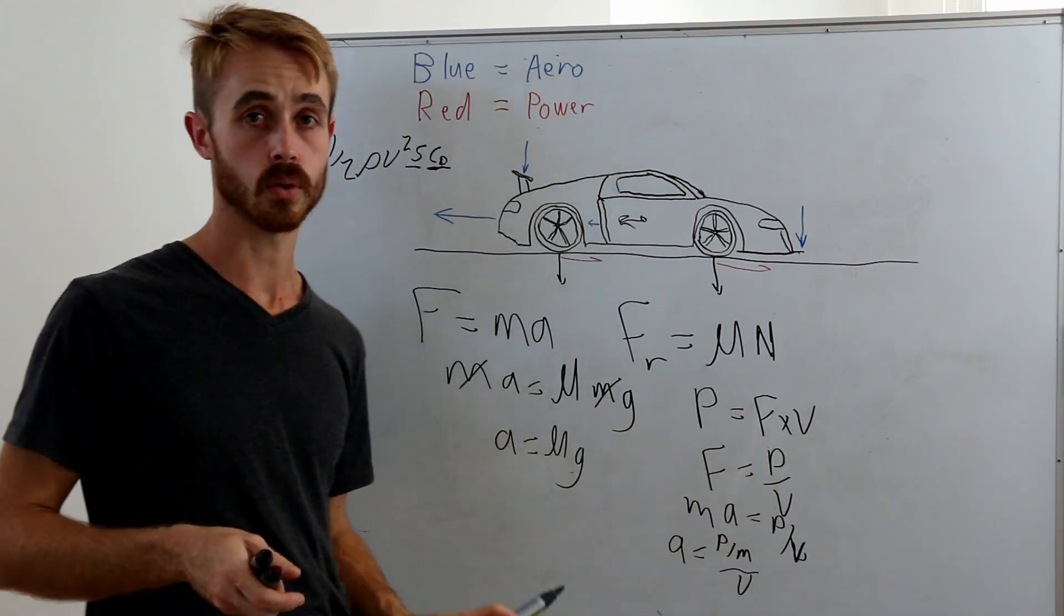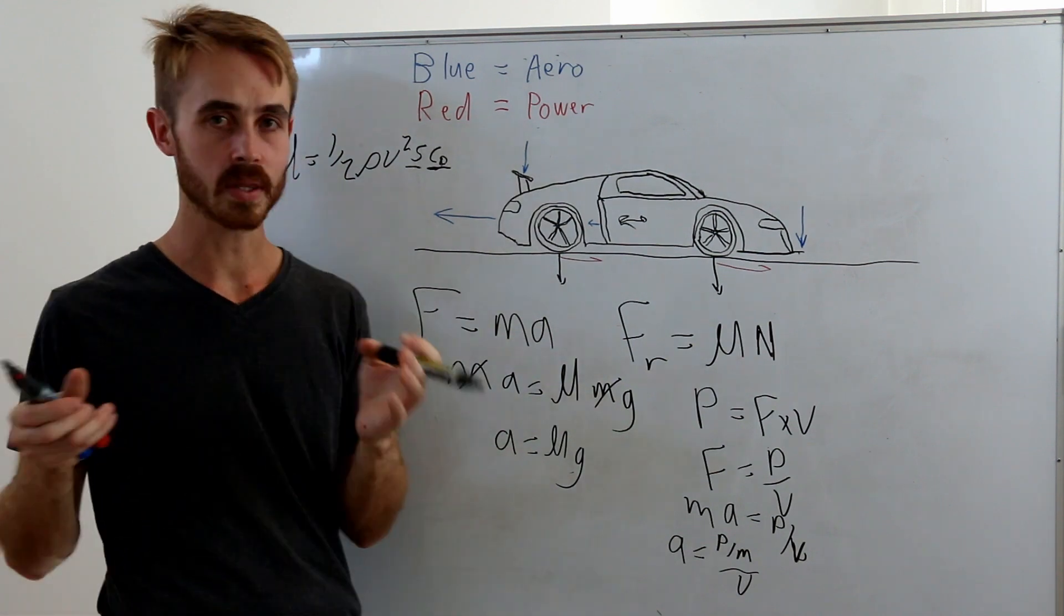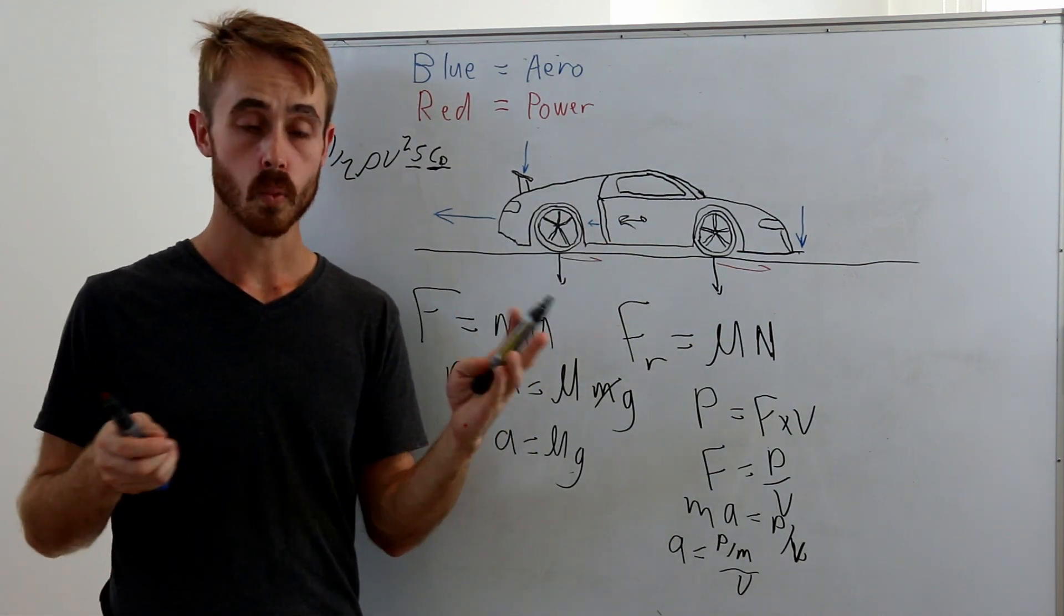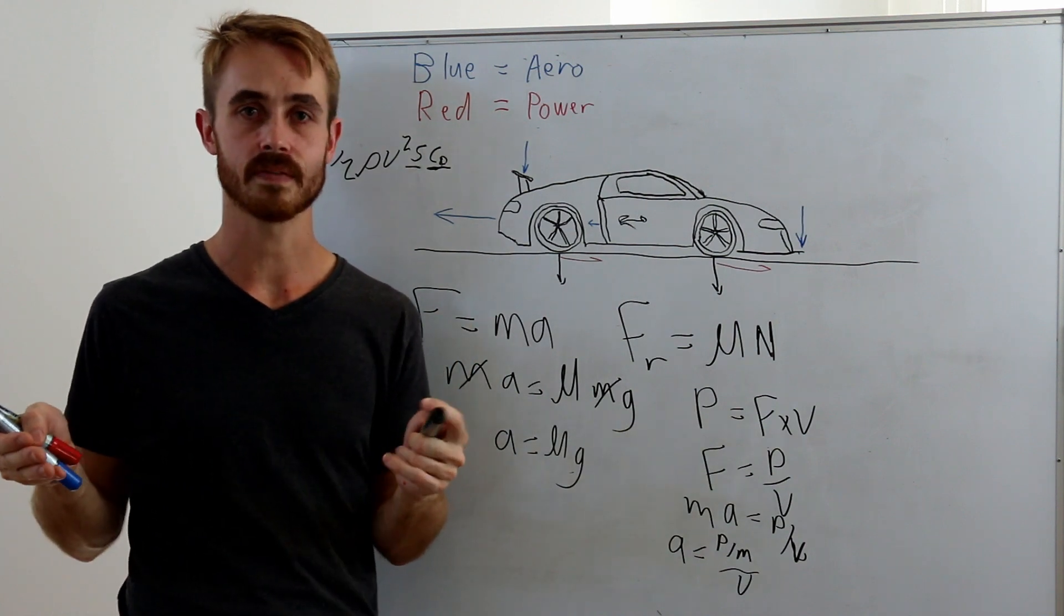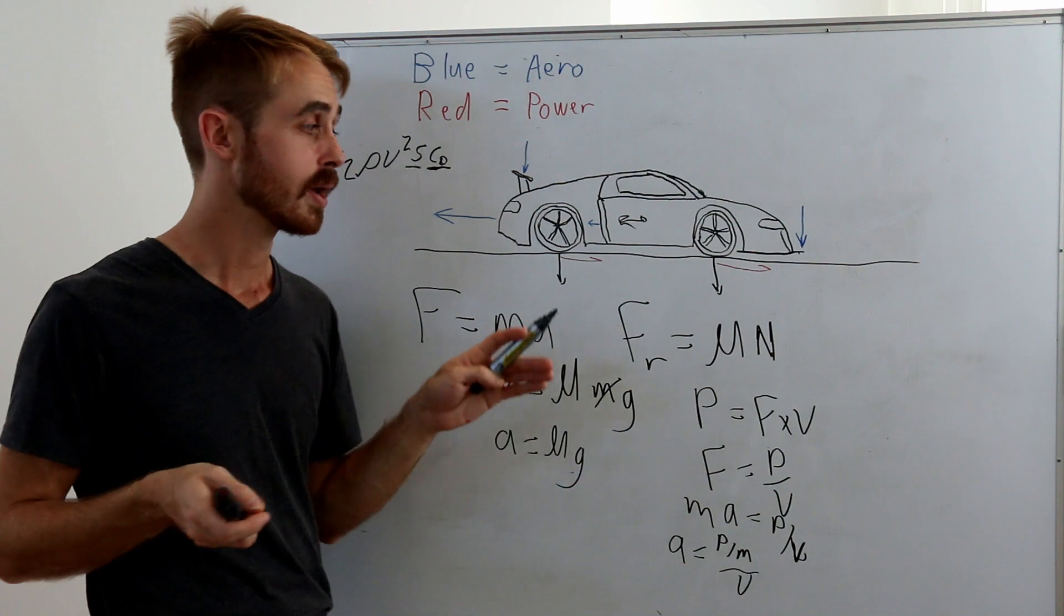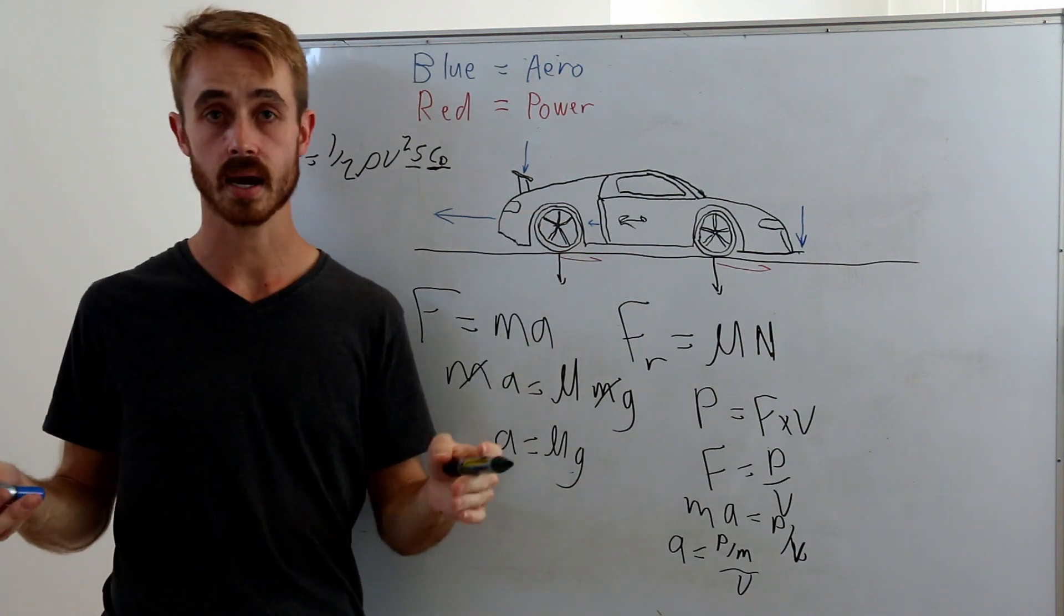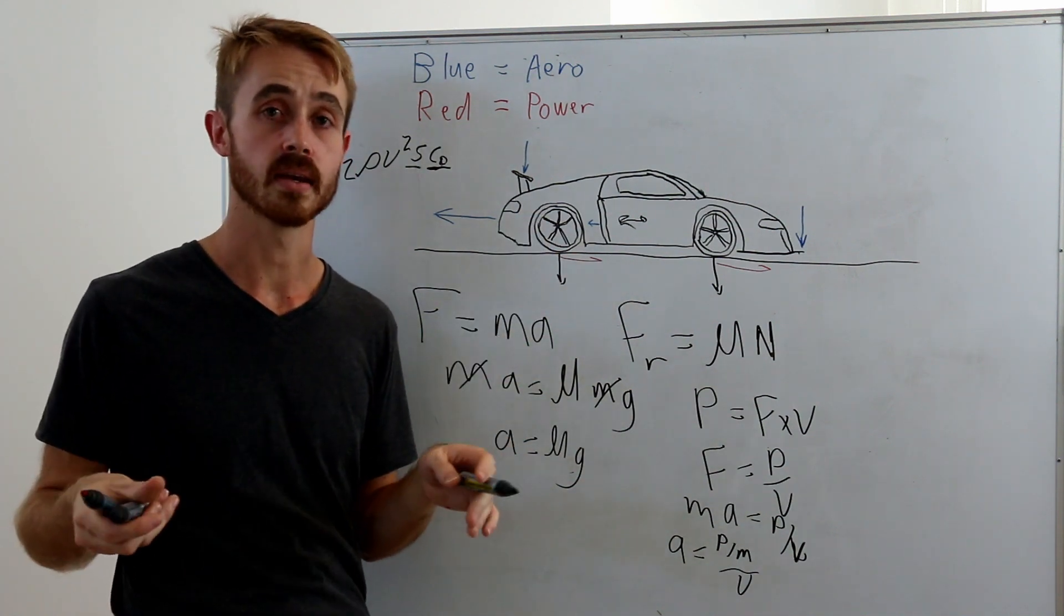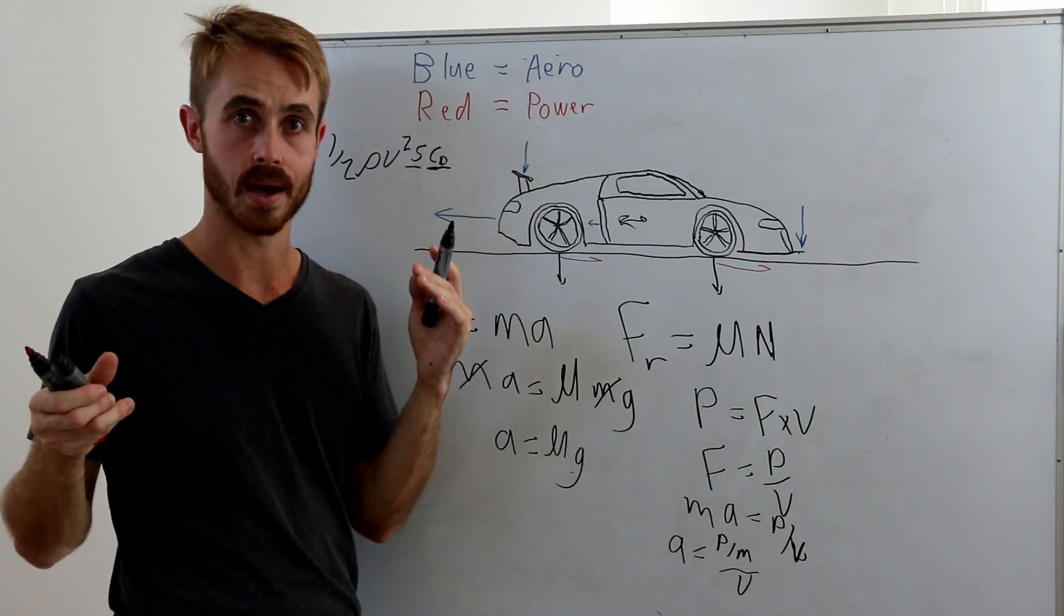What this is basically saying is that at higher speeds once your drag is becoming a significant effect—say you're accelerating from 200 km/h to 300 km/h—you're going to see that a heavier car with the same power-to-weight will actually accelerate faster than a lighter car.